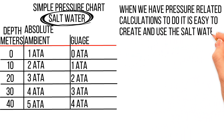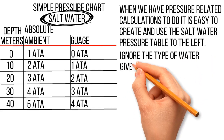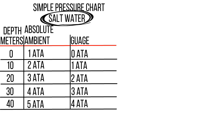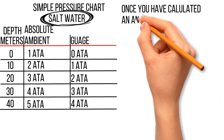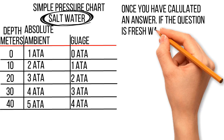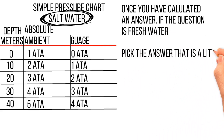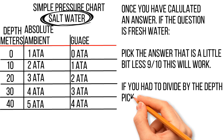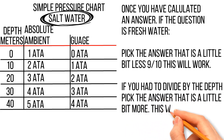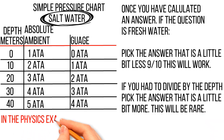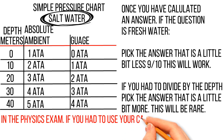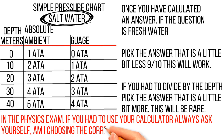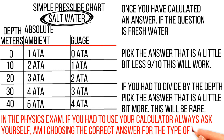When we have pressure-related calculations to do, it is easy to create and use the saltwater pressure table. Ignore the type of water given to you in the question — just use the saltwater pressure table. Once you have calculated an answer, if the question is freshwater, pick the answer that is a little bit less than the answer you calculated — 9 times out of 10 this will work. If you had to divide, pick the answer that is a little bit more. The most important thing to remember: in the physics exam, if you had to use your calculator, always ask yourself — have I chosen the correct answer given the type of water in the question?